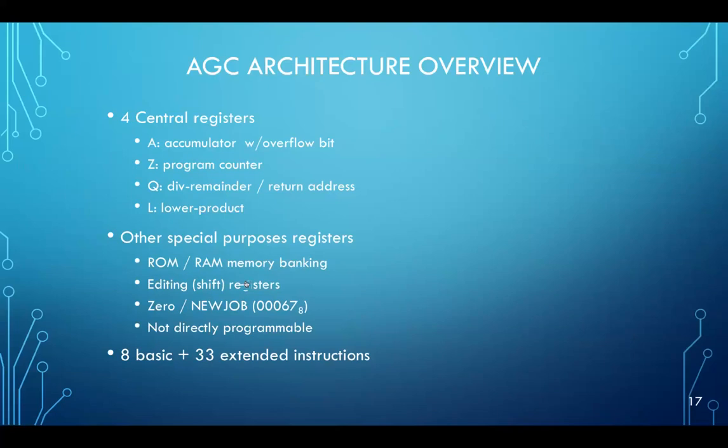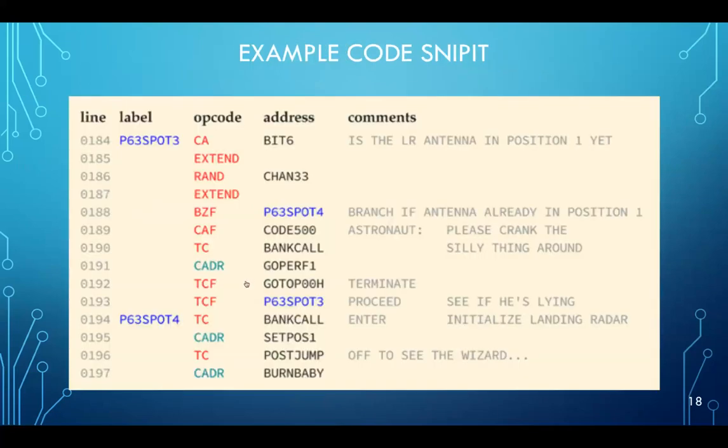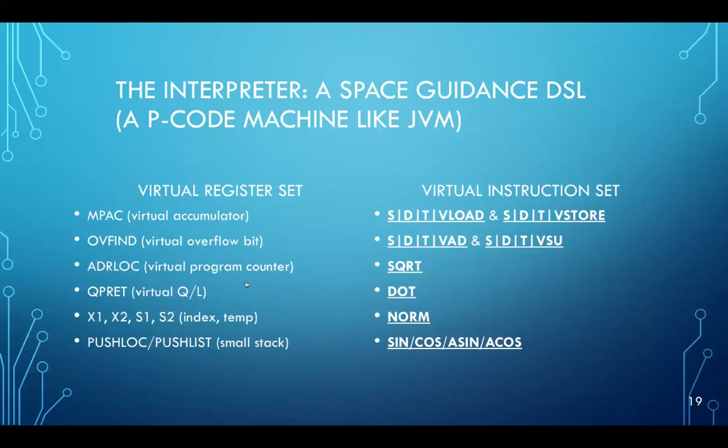There were eight basic instructions in the instruction set and 33 extended instructions. This is just a real simple code snippet. The op codes are there in red. But the interesting thing about this code snippet isn't so much the op codes or the instructions, but it's the actual comments from the developers that exist in the code. By the way, all of the source code. Well, most of the source code for the Apollo missions is actually now available on GitHub and it actually runs on a virtual Apollo guidance computer simulation. So you can find all this code on GitHub.